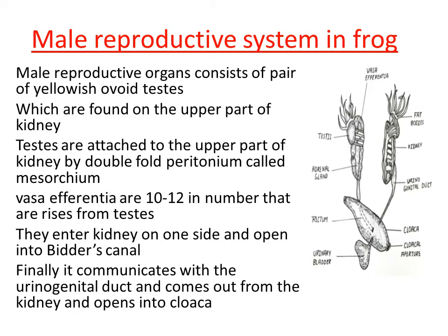To summarize: the male reproductive system consists of a main organ, ovoid in shape and yellowish in color — the testes. Testes are the organs where sperm formation takes place, and they are located on the upper part of the kidney. A double fold peritoneum called mesorchium connects the testes with the kidney. From the testes, nearly 10 to 12 vasa efferentia come out, carrying sperm from the testes and connecting with the urinogenital duct — the common duct for urine and sperm.